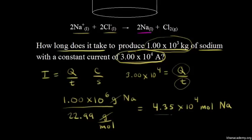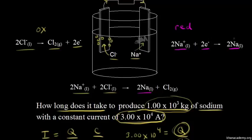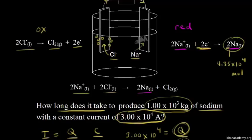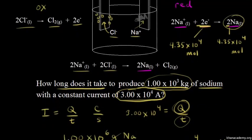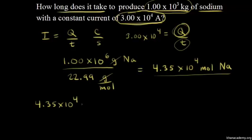How does having moles of sodium help us find charge? We can relate the moles of sodium to the moles of electrons using our half-reaction. We're trying to make 4.35×10⁴ moles of sodium — and the mole ratio is two to two, so we need the same number of moles of electrons: 4.35×10⁴ moles of electrons.